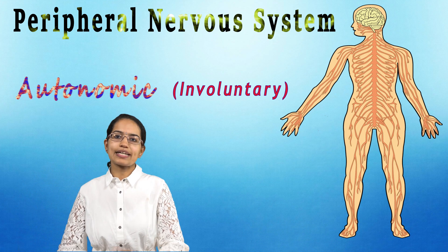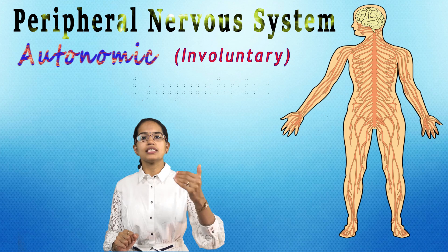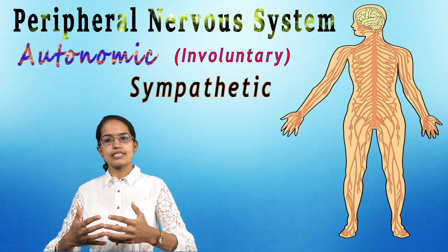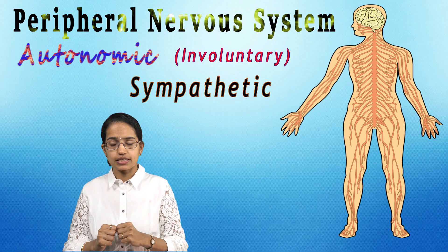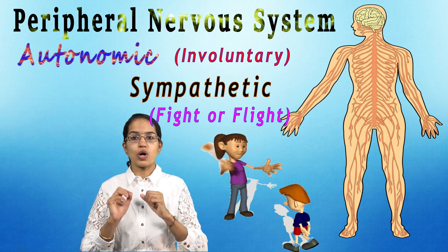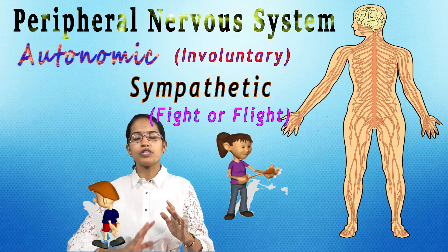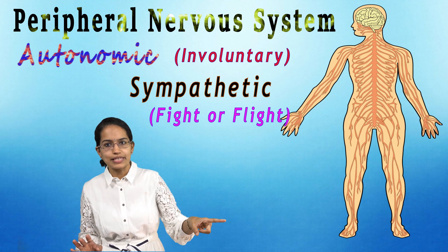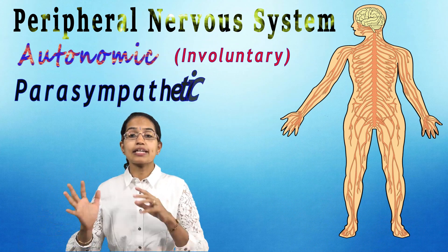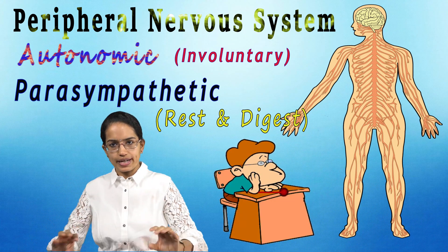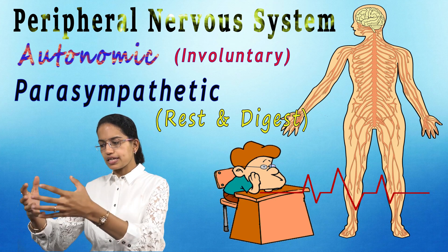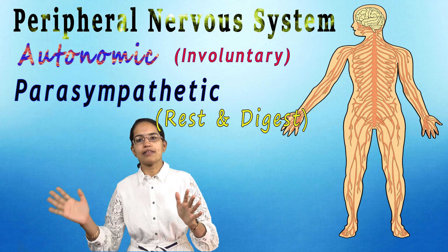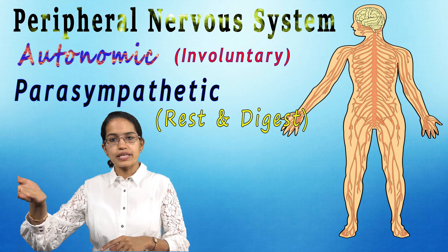This autonomic movement can again be of two types. The first is the sympathetic nervous system, where you have intense energy functions — the fight-or-flight response. Either you fight the situation or you fly away from it. On the other hand, you have the parasympathetic system, which is rest and digest — you want to relax and all the energy functions are basically inhibited. So sympathetic and parasympathetic are both part of your autonomic nervous system.